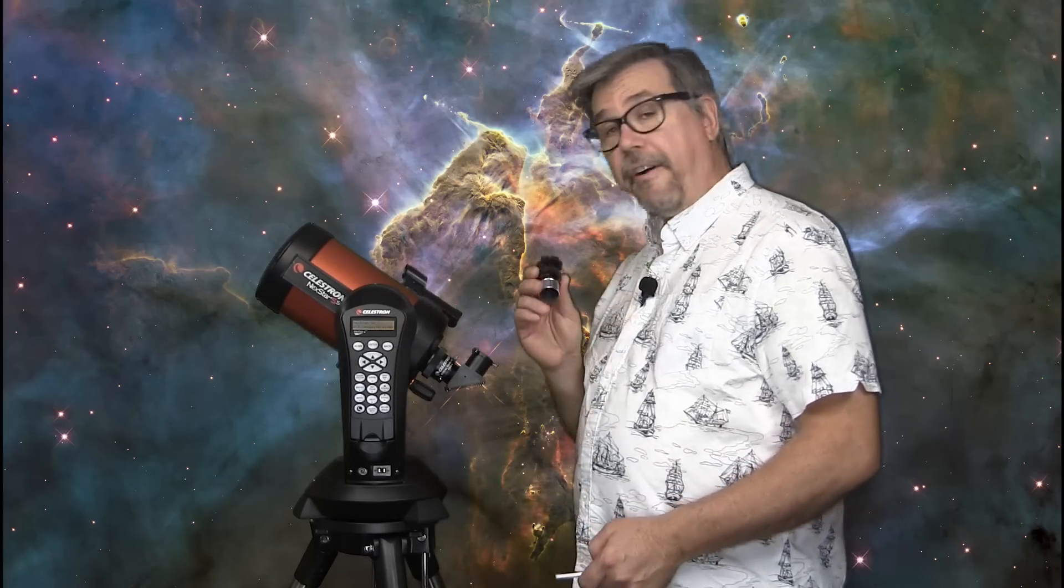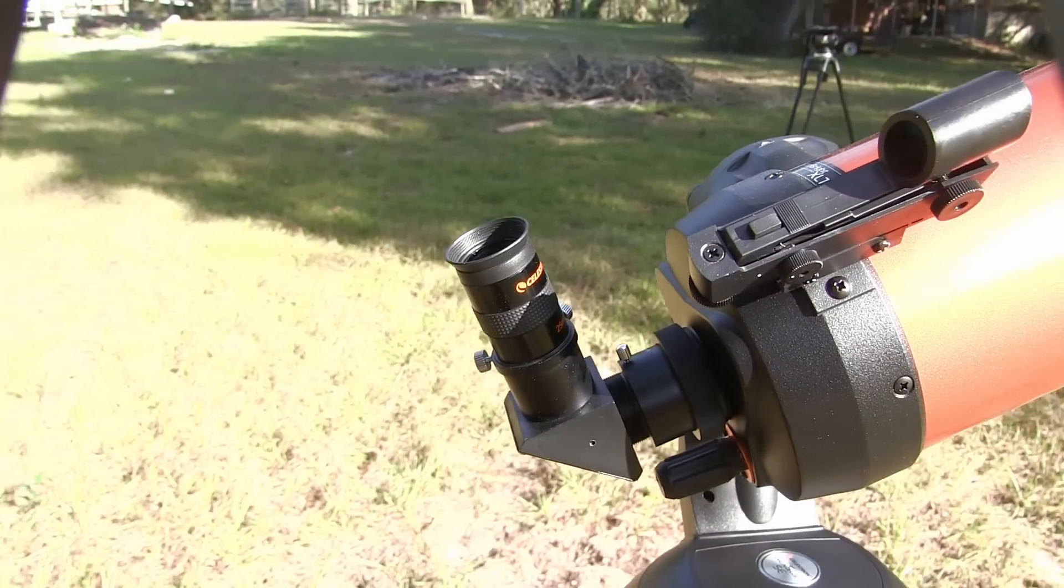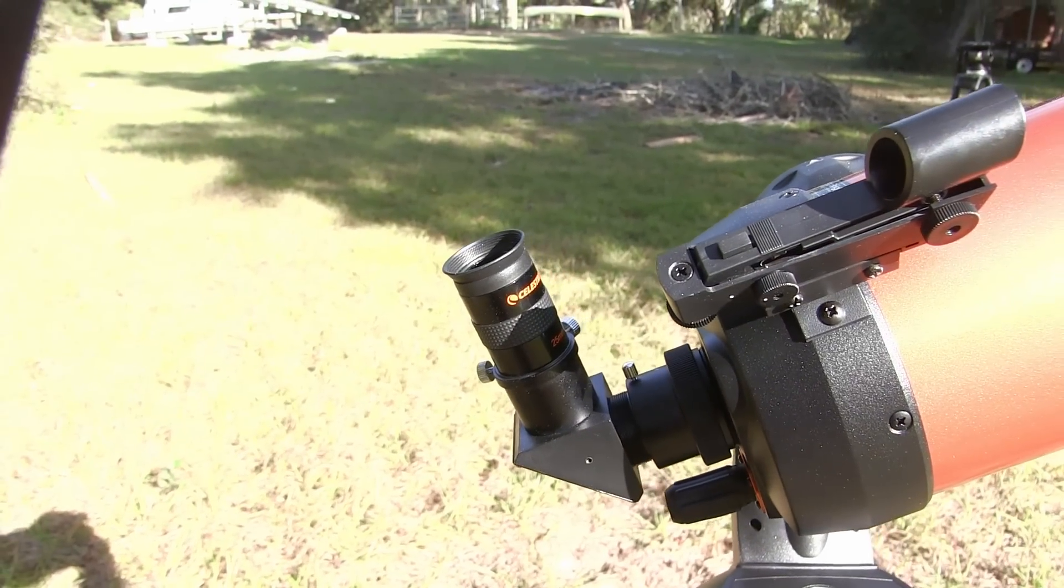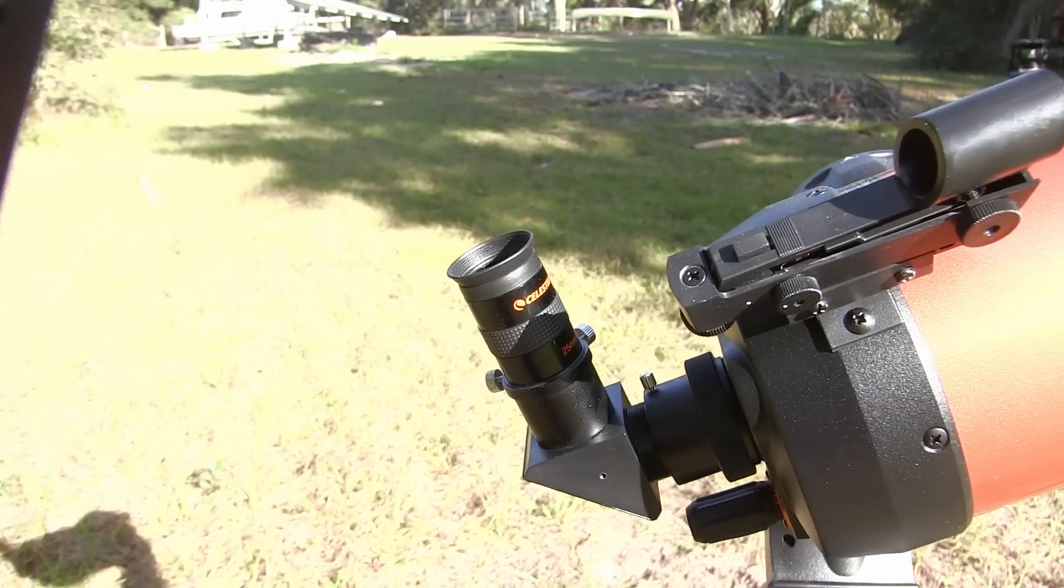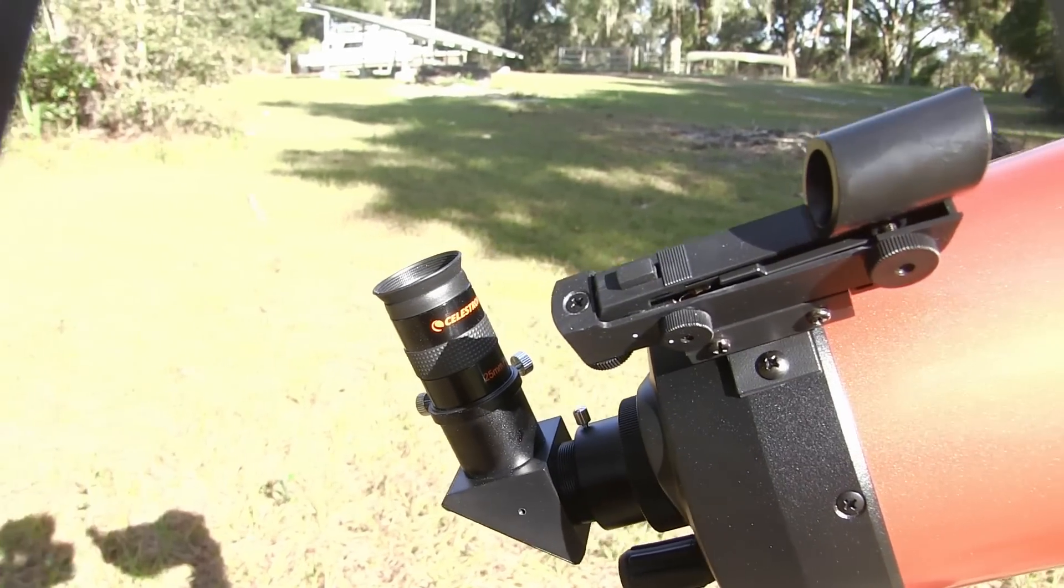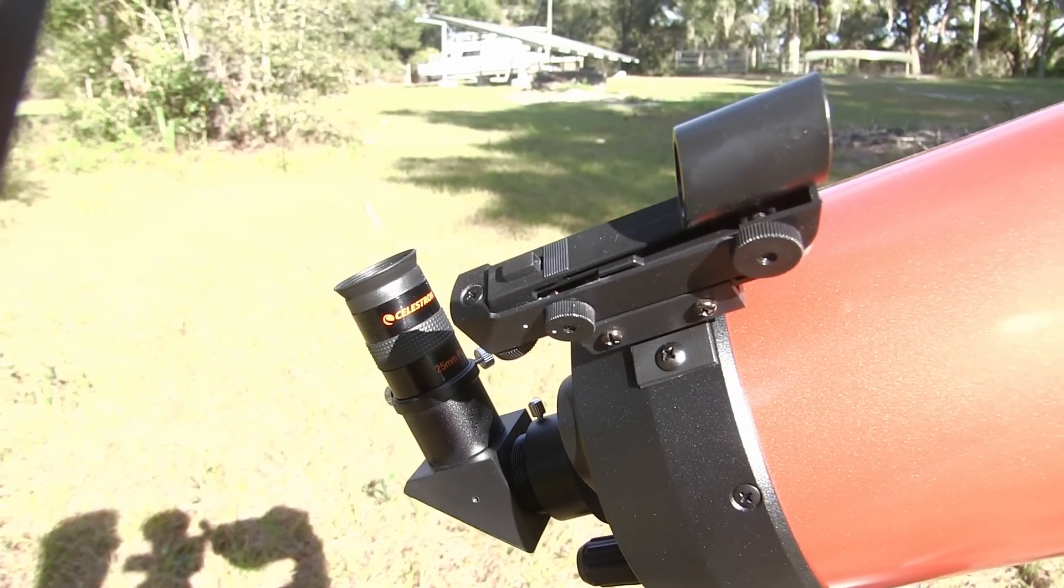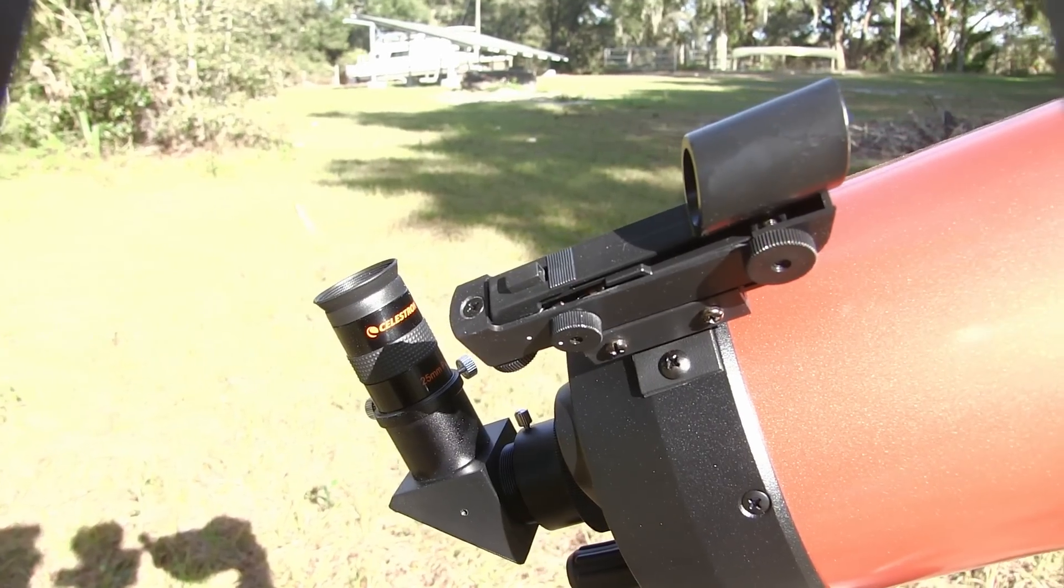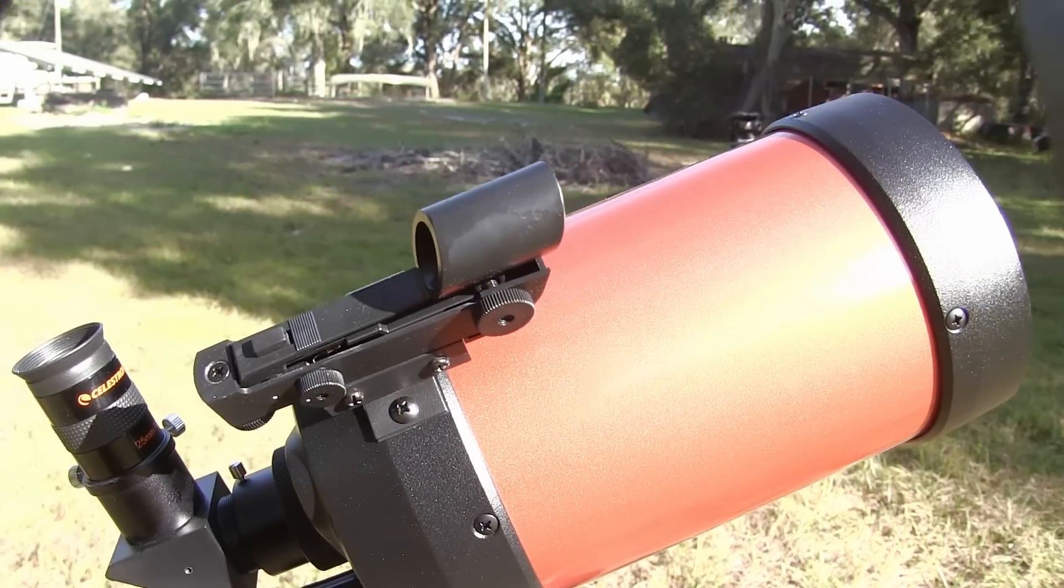Now the unit comes with a 25mm Plossl as well as a prism diagonal so that you can look through it starting right away and it's really good for visual observing. Now eventually you'll want to get more of these eyepieces with varying magnifications but this is a really good start. I mean just using the setup I was able to see the Andromeda Galaxy, the Orion Nebula and even the Crab Nebula although just barely and especially after my eyes were good and dark adapted.